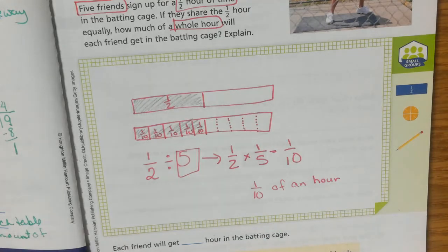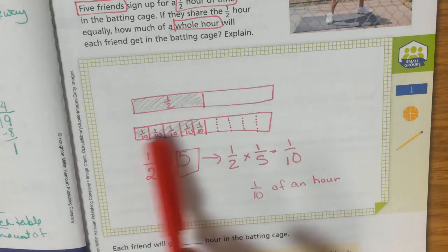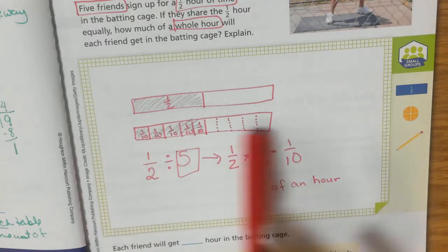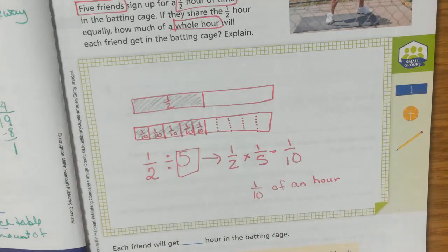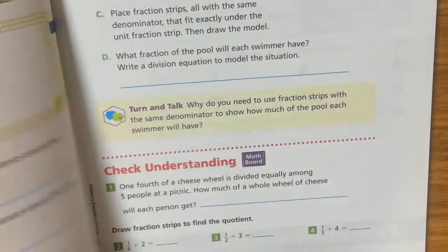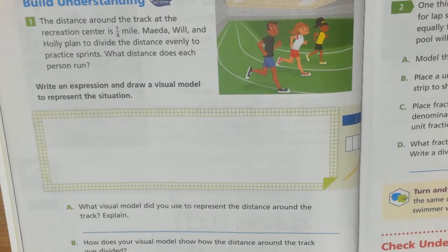You need to divide the one half equally among the friends, and then it will help you to figure out what is the whole thing divided into. Then you have your one tenth. Once you practice a few of these, it won't seem so difficult. It takes a little bit of time to practice.